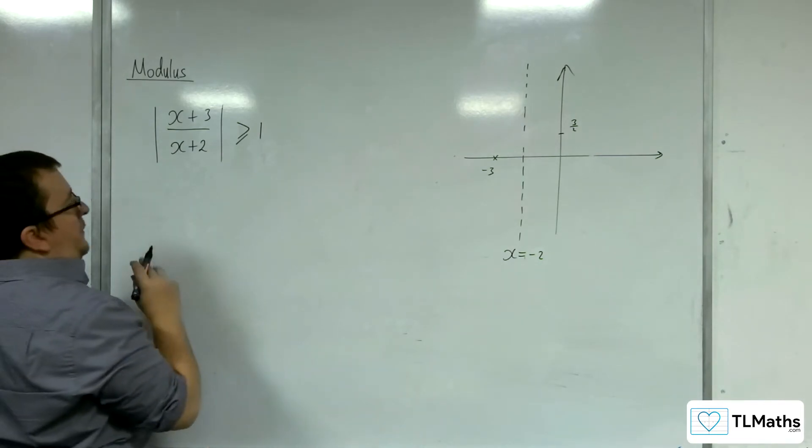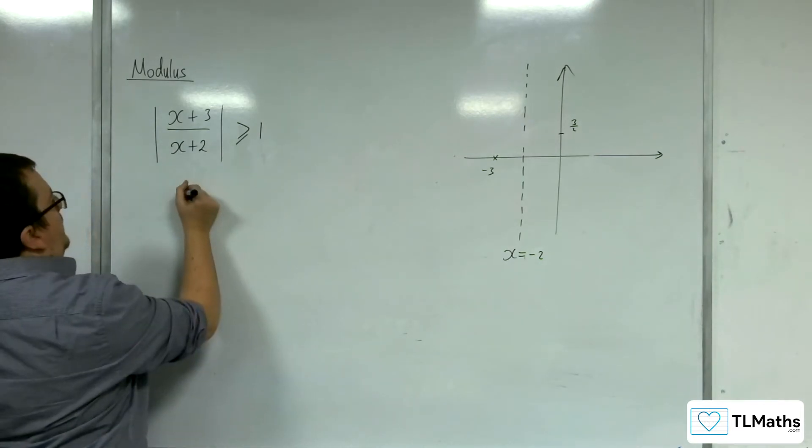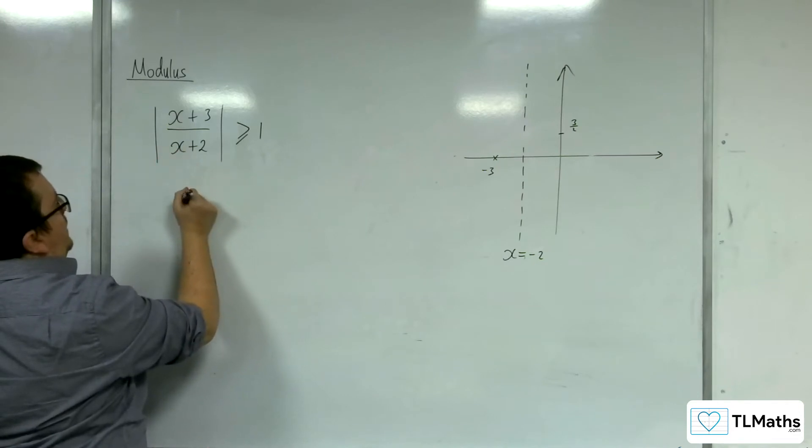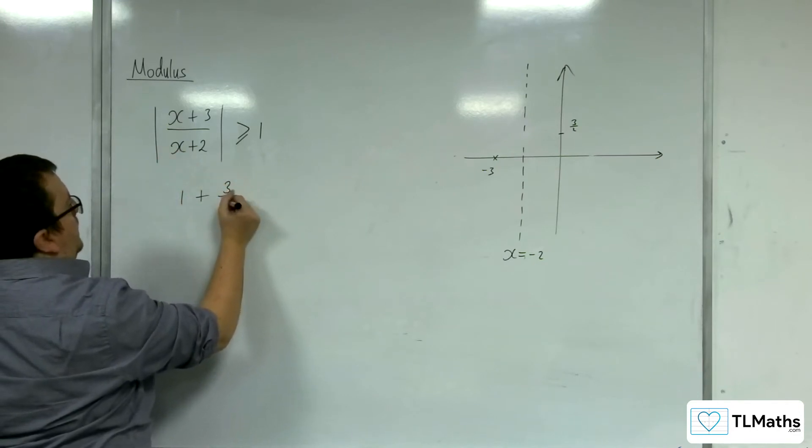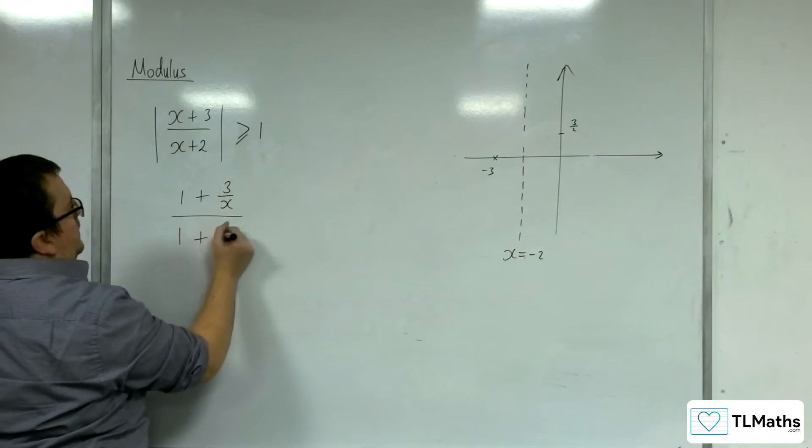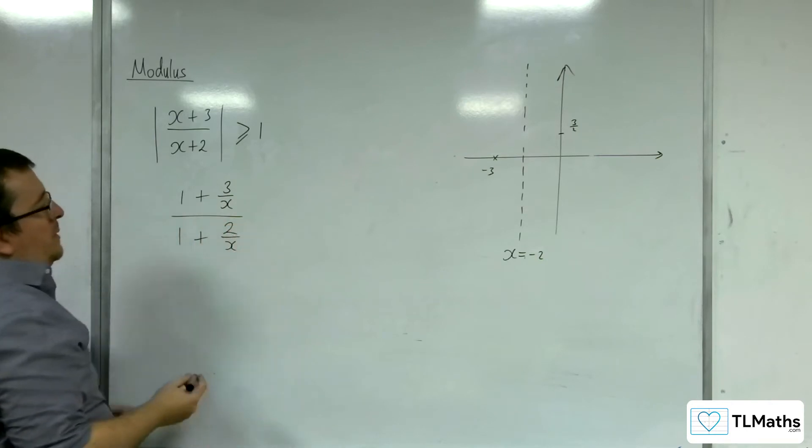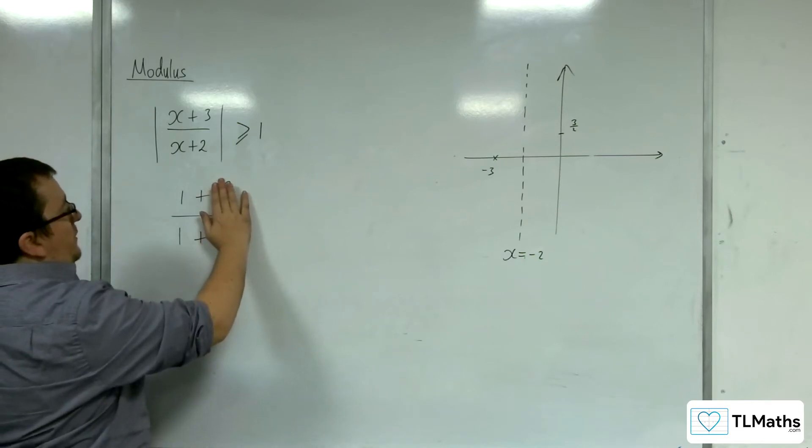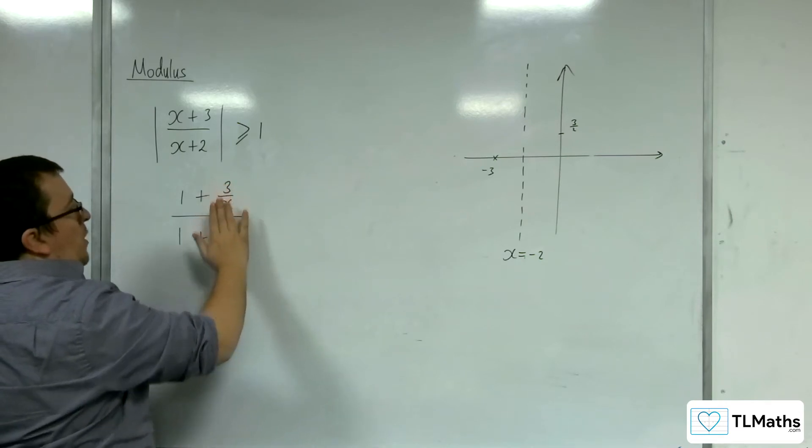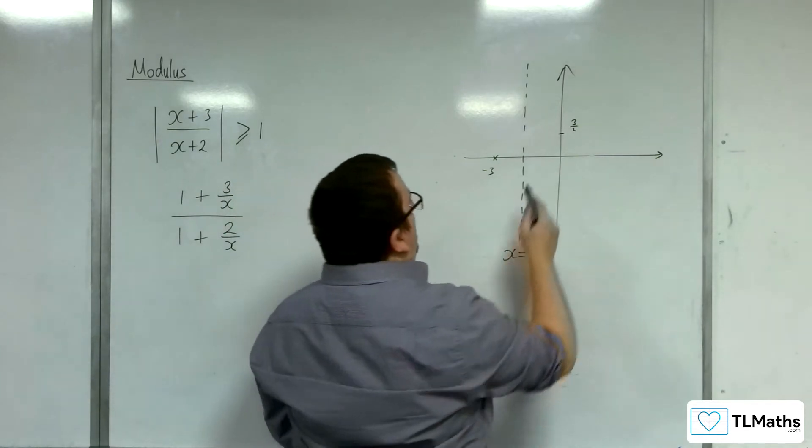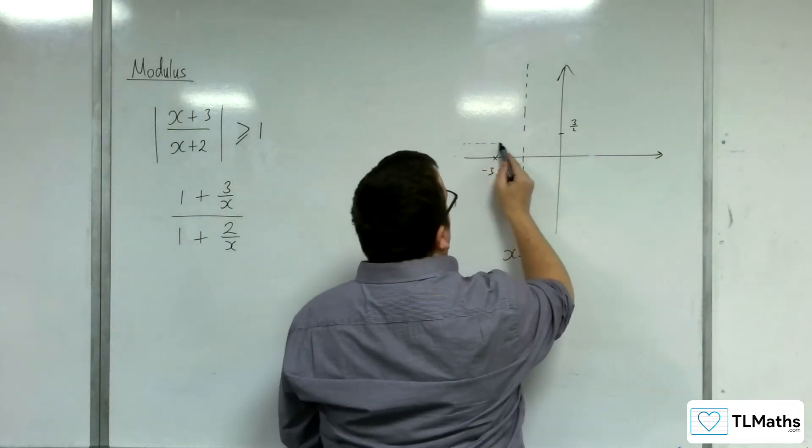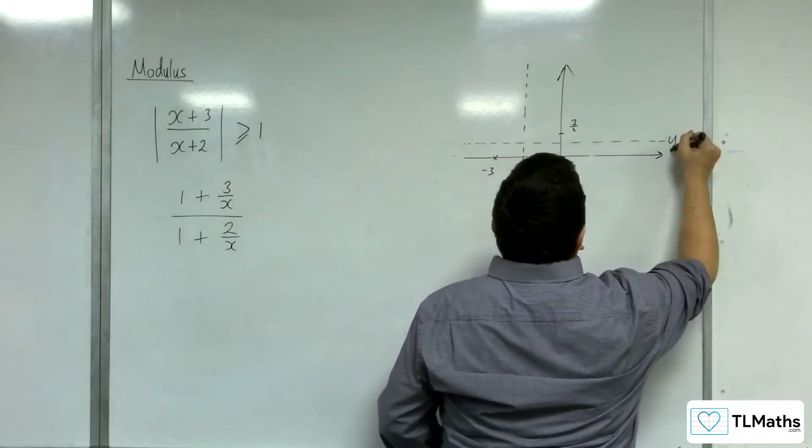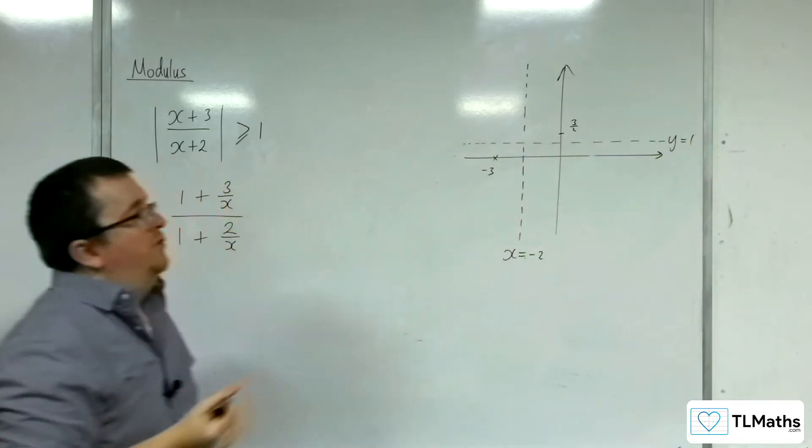And last but not least, a horizontal asymptote exists. If we divide through by x, top and bottom, then it's clear that when x becomes very large, either in the positive or negative direction, these two fractions will tend to 0 and we will get 1 over 1. So y equals 1 is a horizontal asymptote.